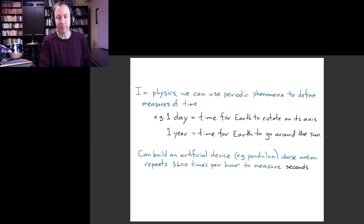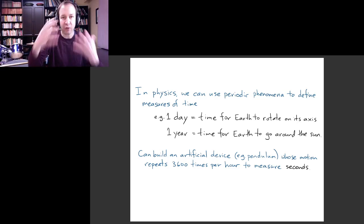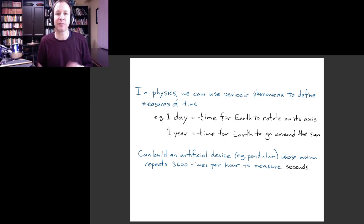We can build something artificial that has a periodic motion, for example a pendulum that swings back and forth - just a weight on a string or a weight on a rod. This kind of device would have a period, or the time between repeats, would be much less than a day. That's very useful. For example, we could make something that goes back and forth 3,600 times per hour, and we could call that amount of time a second. We could use this device to measure this more fine-grained unit of time.